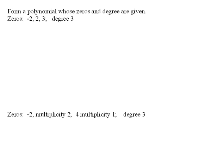We're going to work an example that says: form a polynomial whose zeros and degree are given. We're given zeros at negative 2, 2, and 3. These are x-intercepts — another way of saying this is that we have an x-value of negative 2, an x-value of 2, and an x-value of 3.